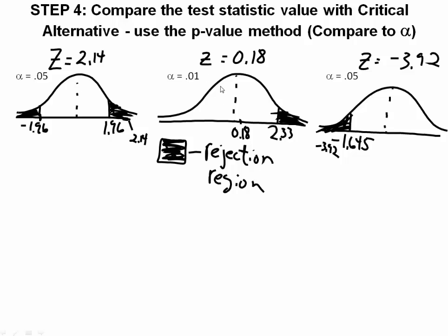Looking at our upper-tailed test case, we have an alpha of 0.01. An alpha of 0.01 gives me a critical value of 2.33 from the tables that we presented earlier. Given 2.33 as our critical value, we get a z-value of 0.018. In this case, 0.018 is not in my rejection region, also called the critical region, and therefore I am not going to reject the null hypothesis in this situation.